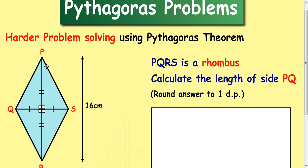So with Pythagoras we're looking for right angle triangles. If you're trying to work out PQ you can see a right angle triangle here.